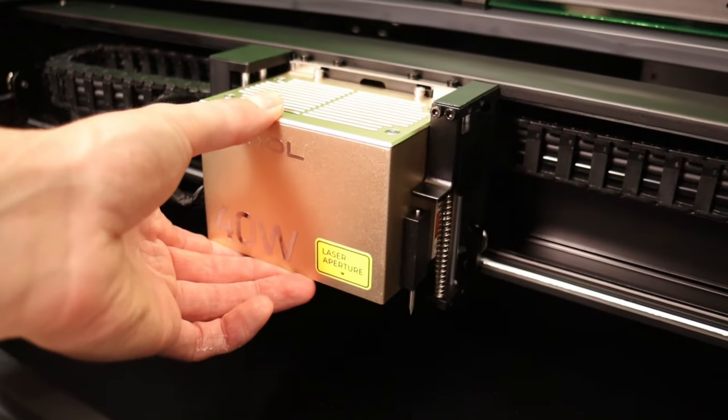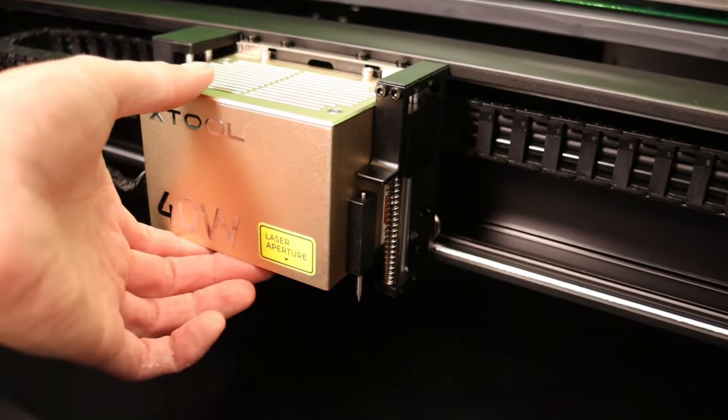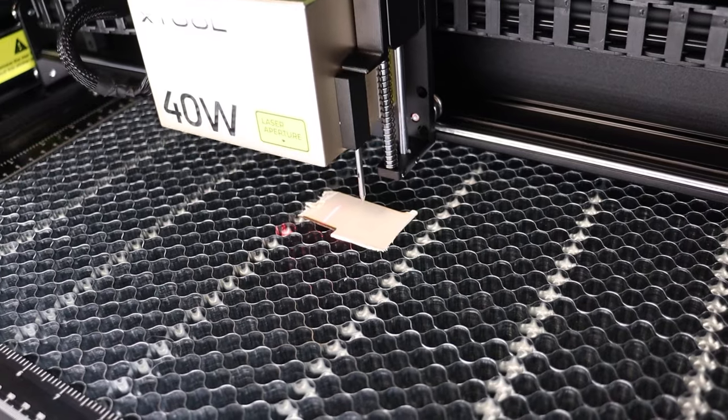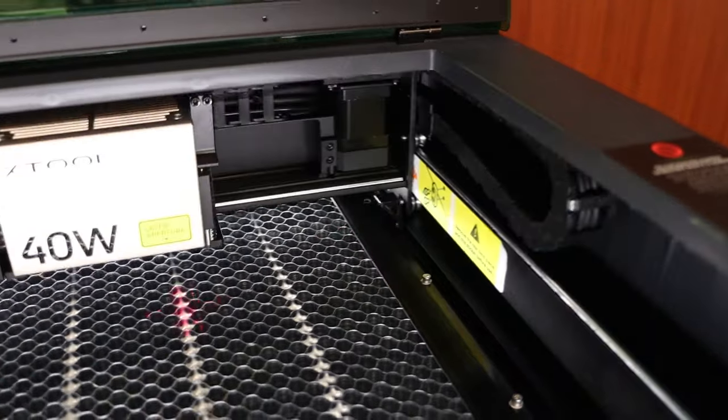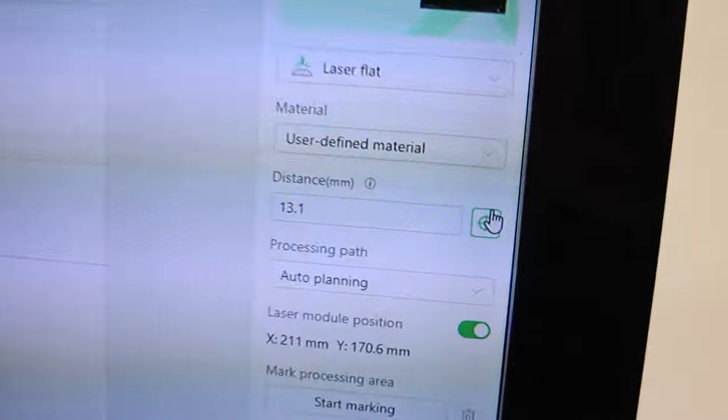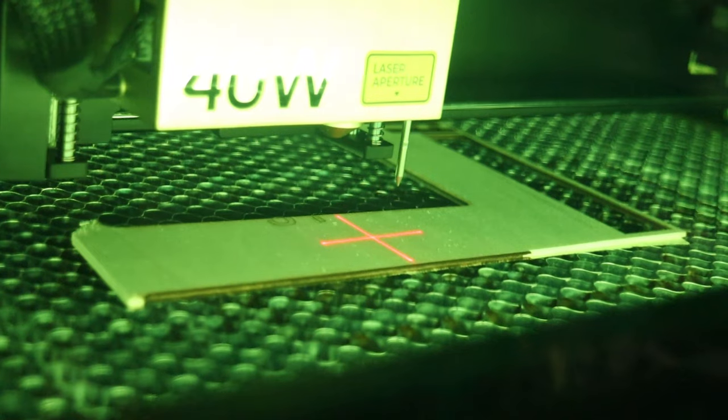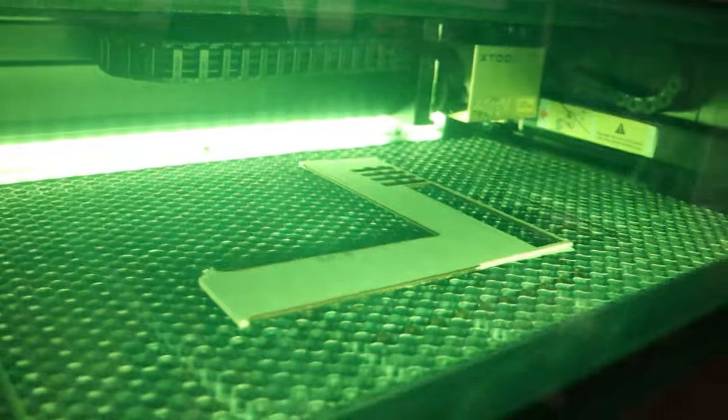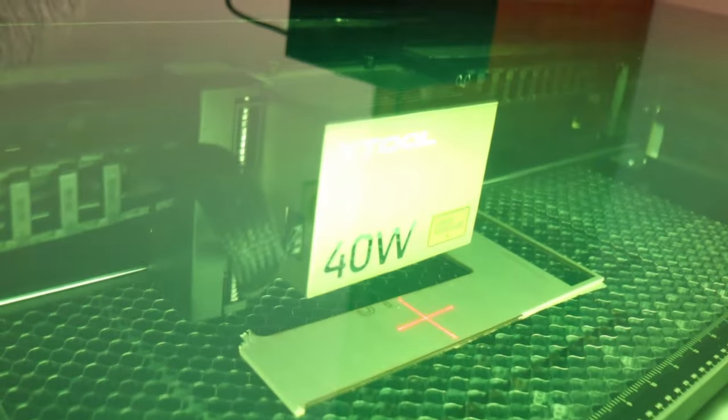The autofocusing system in the X-Tool S1 is very interesting. It uses a needle for probing the surface. This system works on all materials. It works in the X-Tool Creative Space software and it also works in Lightburn. In Lightburn, you need to add the custom X-Tool settings file to get the macro controls needed for operating the focusing procedure. It is a bit more complicated but it works almost as good as in the X-Tool Creative Space software.